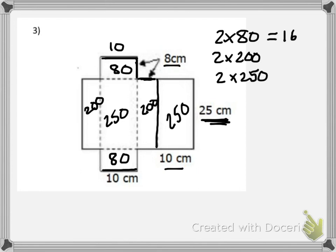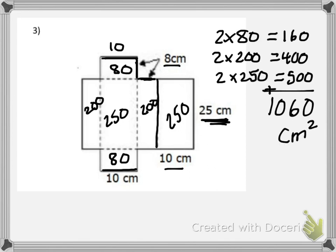So that's 160, 400, and 500. And when we add all of that up together, that gives us a full area of 1,060 centimeters squared.